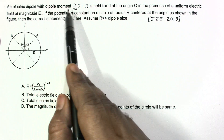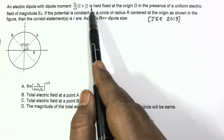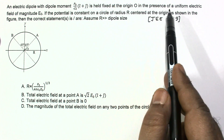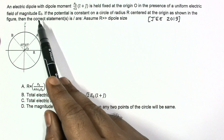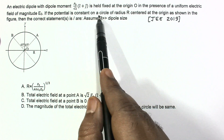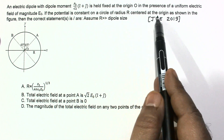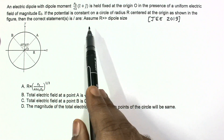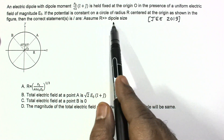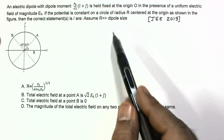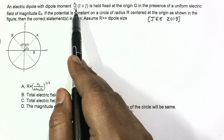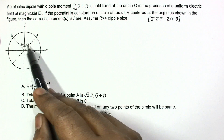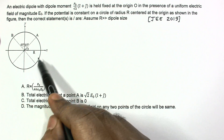The question from JEE 2019 Advanced: An electric dipole with dipole moment p₀/√2 (î + ĵ) is fixed at the origin O in the presence of a uniform electric field of magnitude E₀. If the potential is constant on a circle of radius R centered at the origin, then identify the correct statement. Assume R is much greater than the dipole size. The dipole is along this direction and the circle represents points of equal potential.